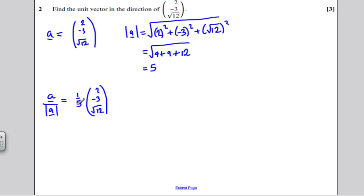You could times the fifth by everything inside and write it as a decimal, 2 times a fifth is 0.4, minus 3 times a fifth is minus 0.6, and this times a fifth, well you might want to just leave it as a fifth root 12 to save yourself with decimals. So, there would be the unit vector in that direction.